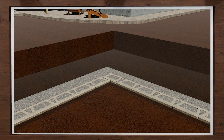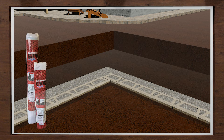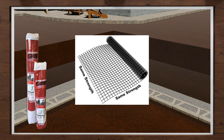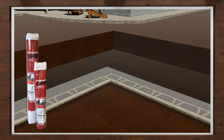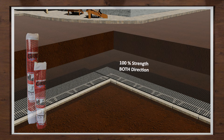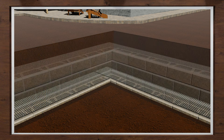Another grid option is our AB reinforcement grid. This is a biaxel grid for walls on residential job sites up to six feet tall that has the same strength in both directions. Biaxel grid allows you to install the grid either parallel or perpendicular to the wall.